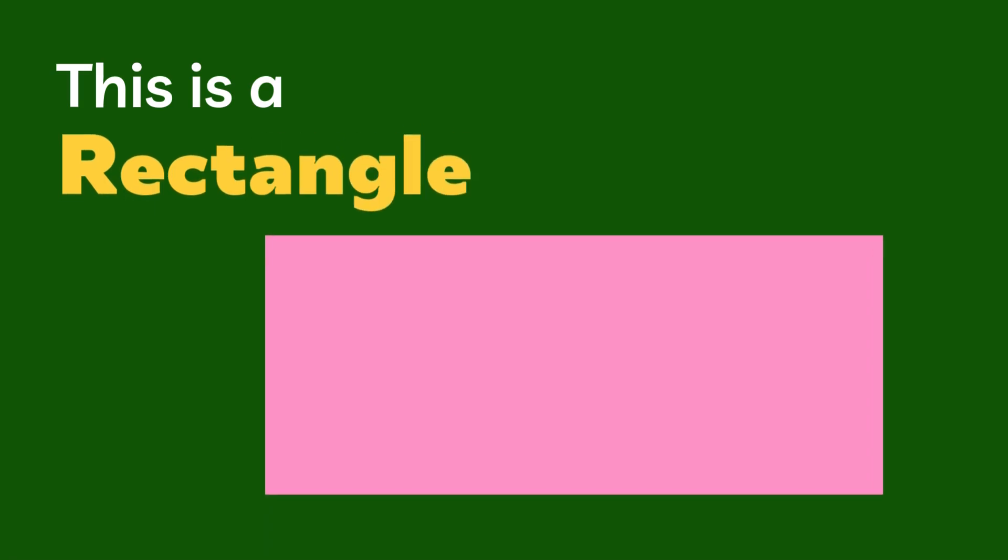This is a rectangle. It has four sides and four corners, but its opposite sides are equal. Can you see how it stands tall?